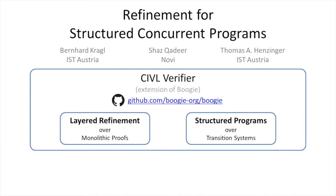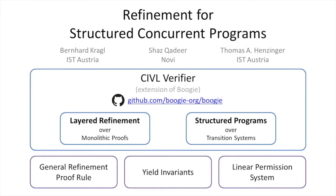The design of the CIVIL verifier for concurrent programs follows two principles. First, CIVIL advocates systematic proofs over multiple layers of refinement instead of one-shot monolithic proofs. Second, CIVIL represents both low-level implementations and high-level abstractions as structured programs, without resorting to transition systems, which are inadequate for user interaction. We present the foundation for refinement reasoning over concurrent programs with structured control flow, including a new general and modular refinement proof rule, yield invariance — a new powerful form of invariance for simpler and more efficient proofs — and a linear permission system that establishes free invariance over program variables from different local scopes.